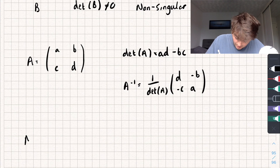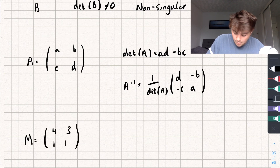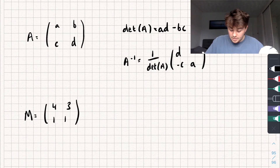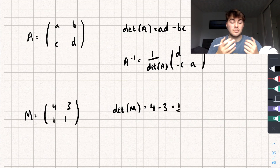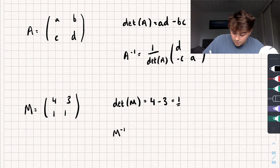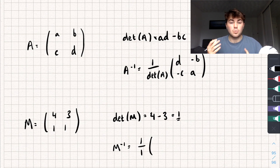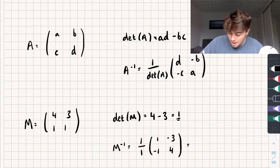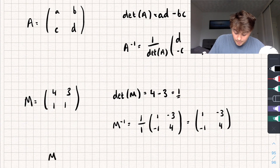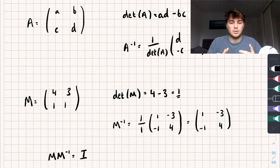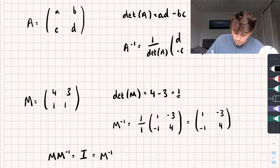For example, say we have the matrix M equal to 4, 3, 1, 1, and we want to find its inverse. First, I find its determinant: the determinant of M equals 4 multiplied by 1, subtract 3 multiplied by 1, which gives a determinant of 1 — non-zero, so we have an inverse. Then the inverse equals 1 over the determinant multiplied by the matrix with A and D swapped to get 1 and 4, and negatives of B and C giving negative 3 and negative 1. Since the determinant is 1, the inverse of M is simply the matrix 1, negative 3, negative 1, 4. If you multiply matrix M by its inverse you get the identity, and it doesn't matter if we pre- or post-multiply.